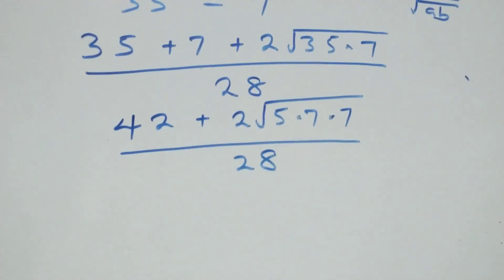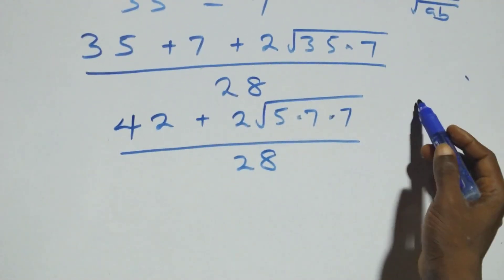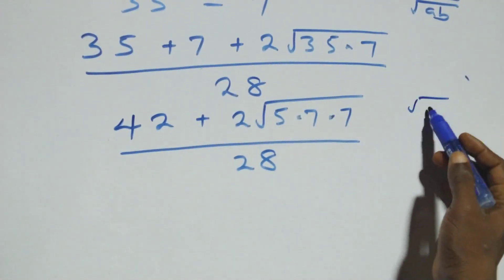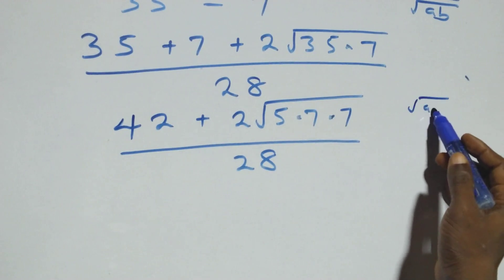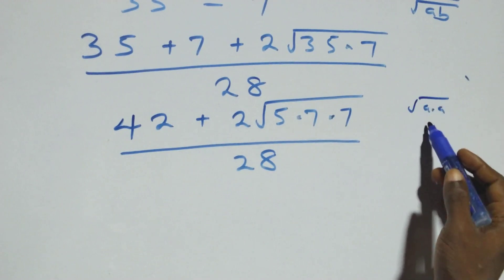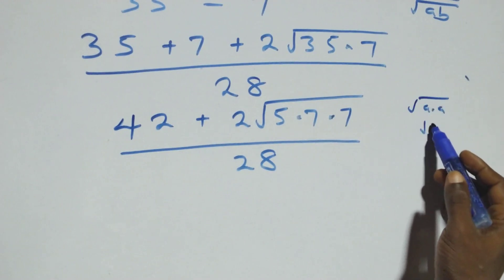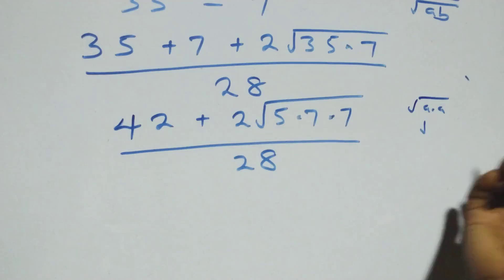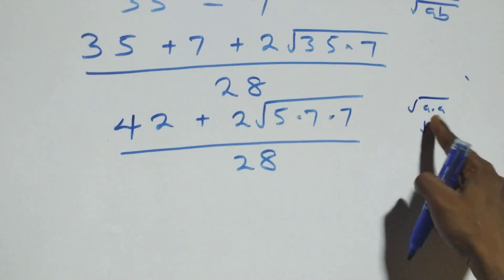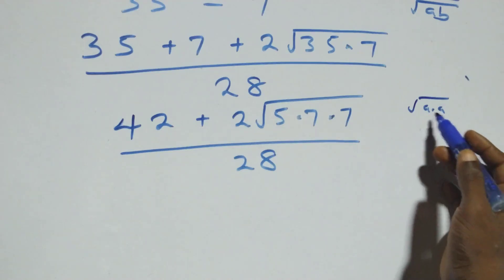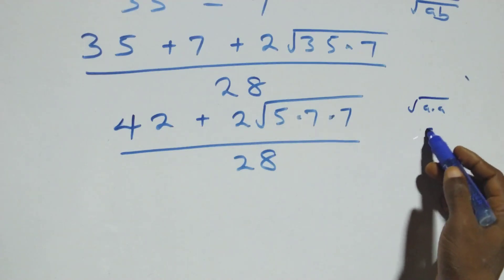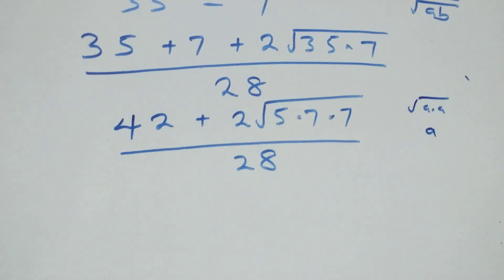Which implies: when we have root A times A, you can write that as A, simply multiplying, that is just A.